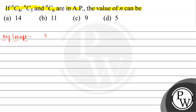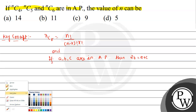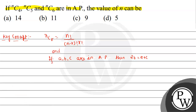Let's write the key concept. NCR equals N factorial divided by (N minus R) factorial into R factorial. And if A, B, C are in AP, then 2B equals A plus C. Let's see the solution of the question. We are given that NC4, NC5, and NC6 are in AP.